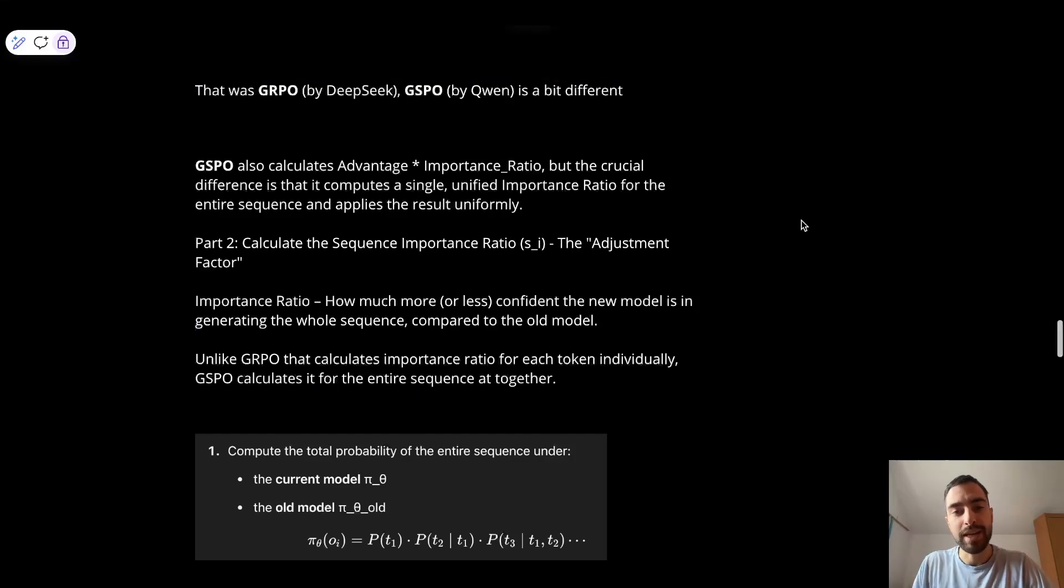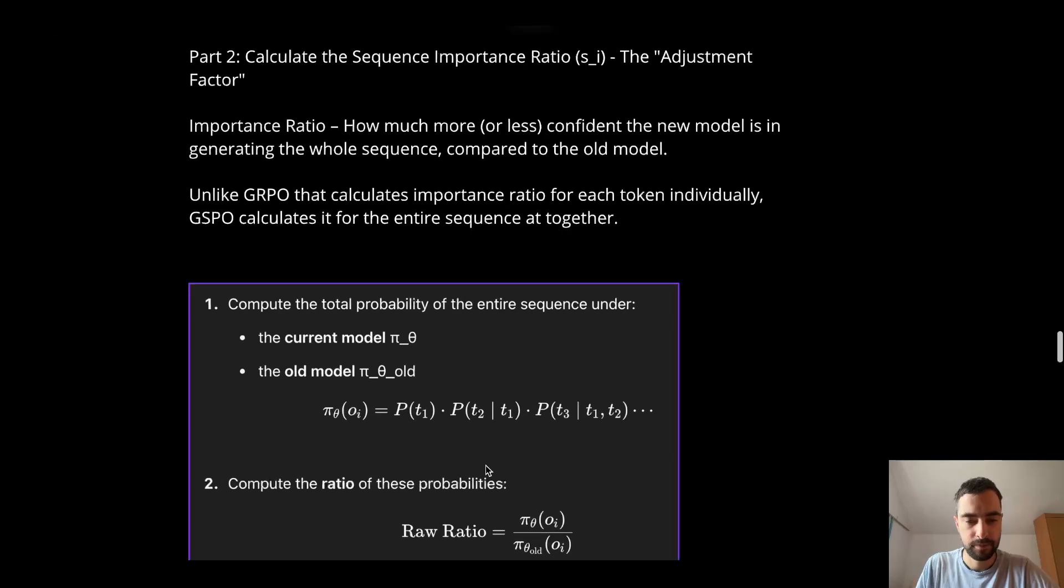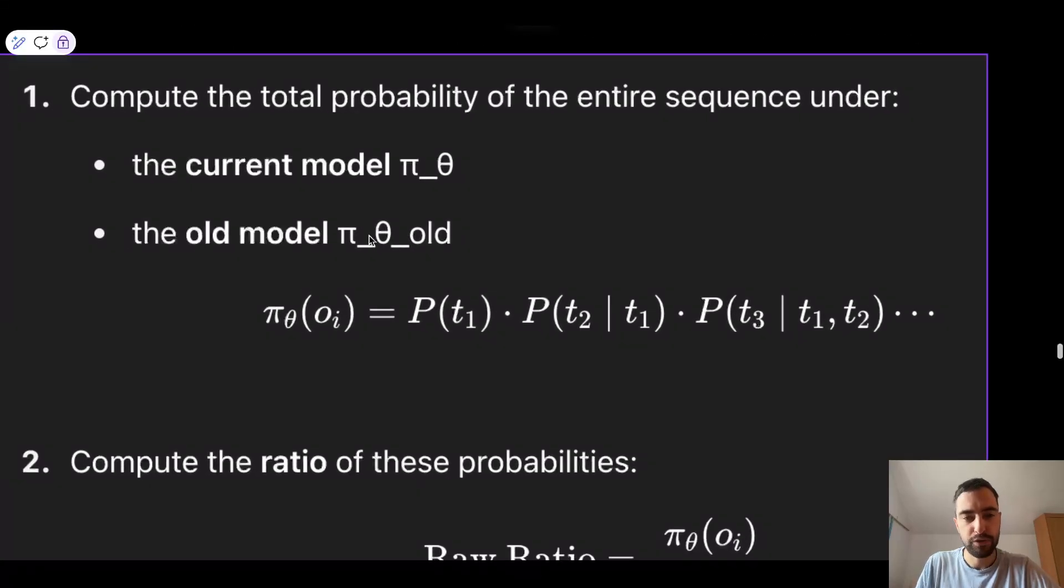And GSPO by Quen is exactly the same. There is just one difference. Instead of calculating importance ratio for every token individually, it does it for the entire answer. So it's very simple. Look at this. So we have for both of the old and the new model, we calculate the same probability. So it's probability of the first token times probability of the second token given first token times probability of the third token given second and first token, etc. So we just multiply probability for each token together to get the probability of the entire sequence.